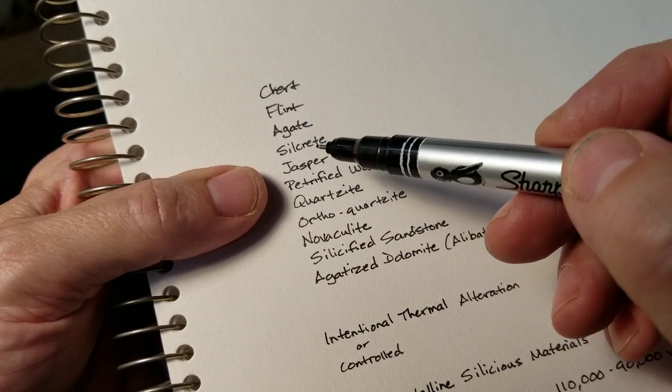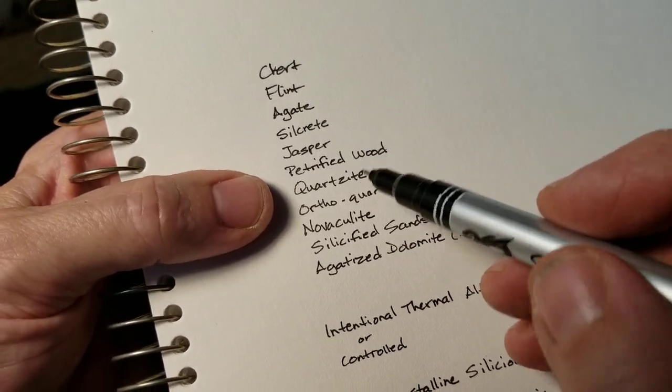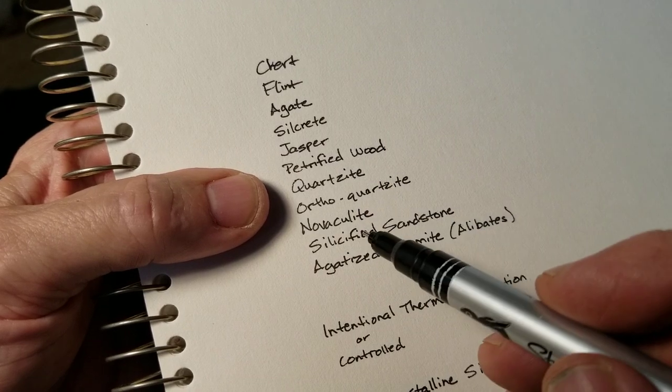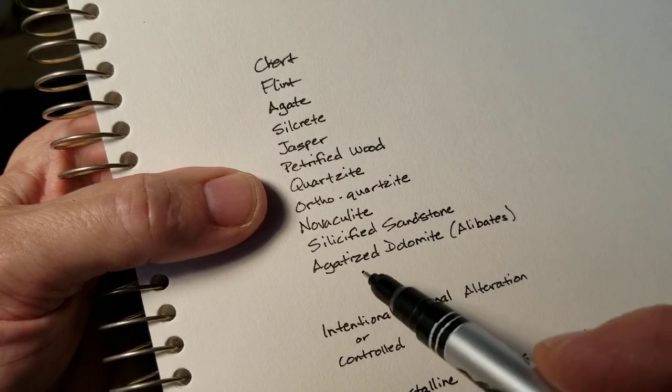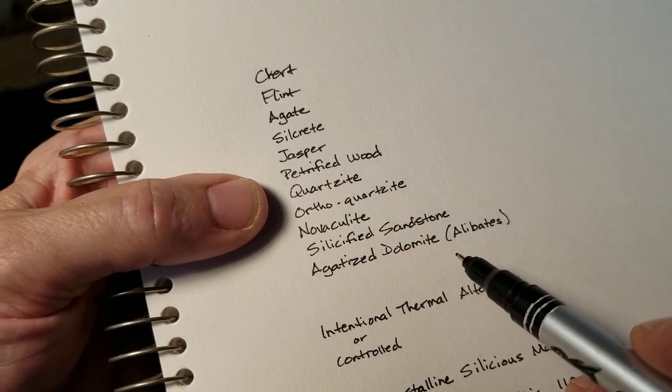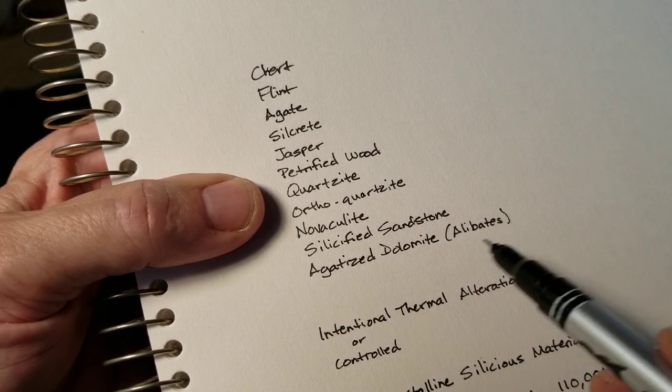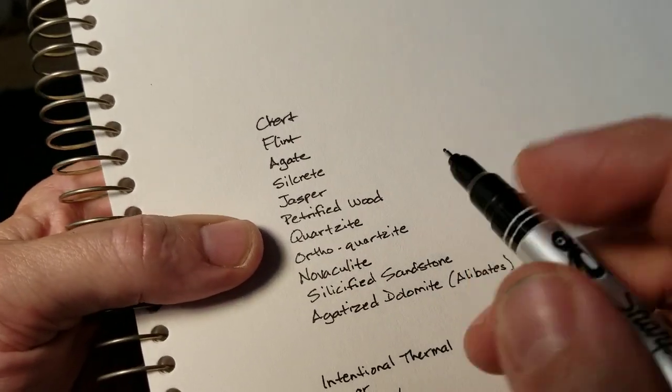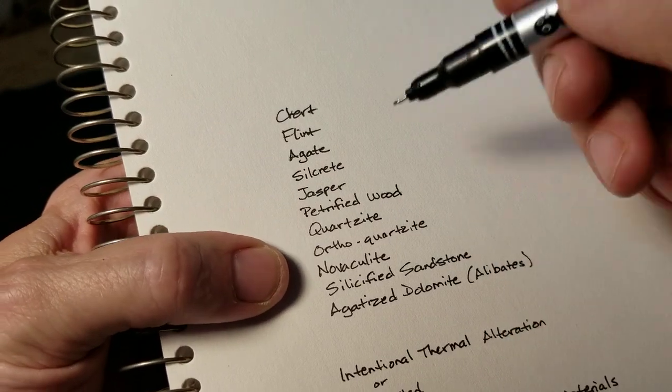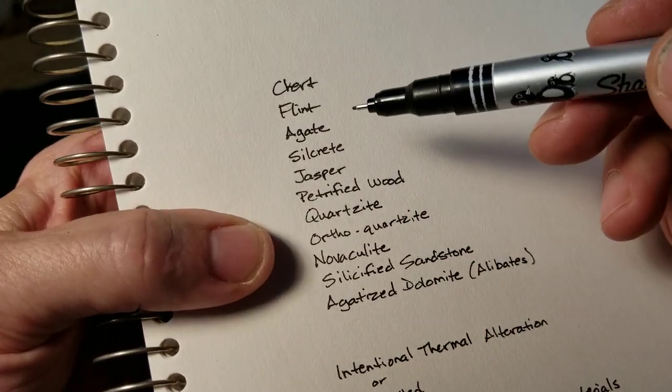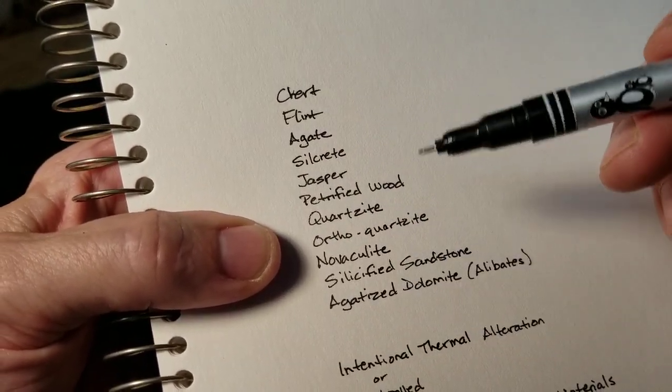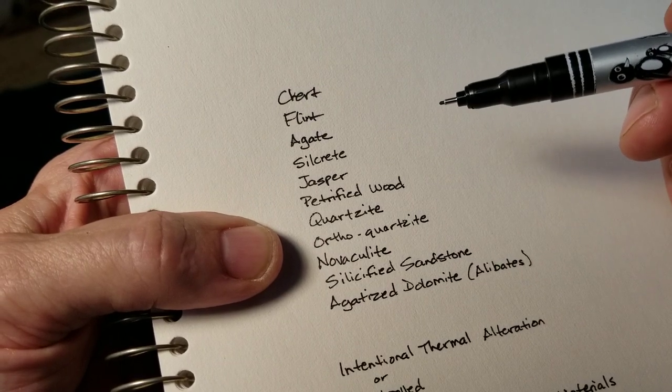Chert, flint, agate, silcrete, jasper, petrified wood, quartzite, ortho quartzite, novaculite, silicified sandstone, agatized dolomite or alibates. I know about this one because it's in Texas and surrounding areas. This might not be a complete list, but if your material is on this list, it can be heat treated in most cases.